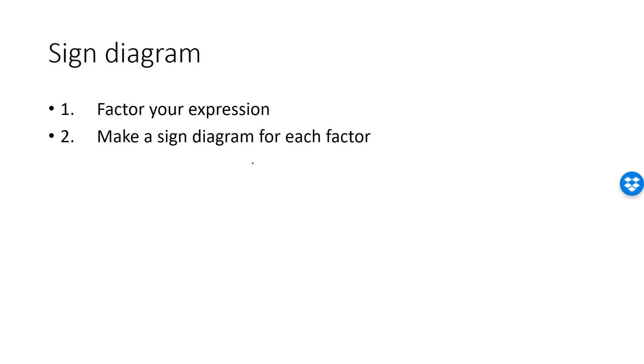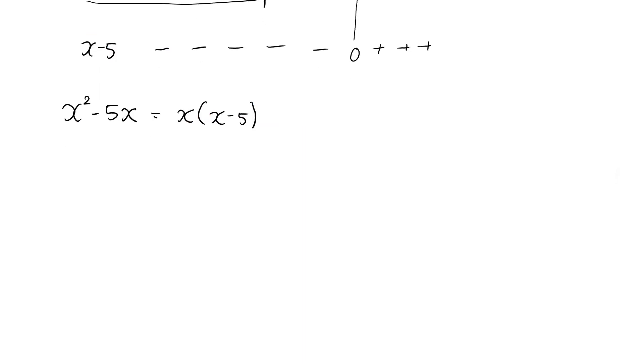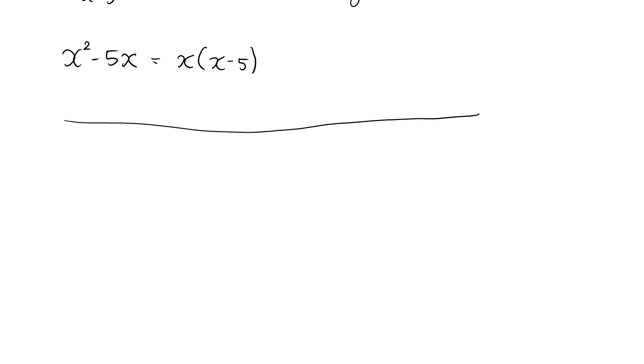In the second step, I make a sign diagram for each of these factors. In this example, I would begin by doing a sign diagram for my first factor x. The factor x is 0 when x is 0, obviously, and I have the following sign diagram for x. The sign diagram for x minus 5 looks like this.